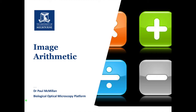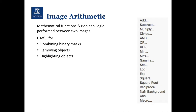Another tool we might use is image arithmetic — performing mathematical functions or Boolean logic between two images. This is really useful for combining binary masks, removing objects we don't want within an image, or highlighting other objects. There are some examples on the right-hand side of the different tools we can use.